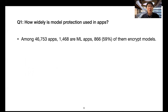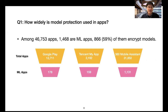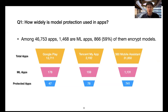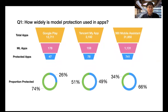To answer question one — how widely is model protection used in apps — among the 46,753 apps, we identified 1,468 machine learning apps. Among them, 59% encrypt their models. The proportion protected differs across app stores: for Google Play it's 26%, for Tencent it's 49%, and for 360 Mobile Assistant it's 66%.